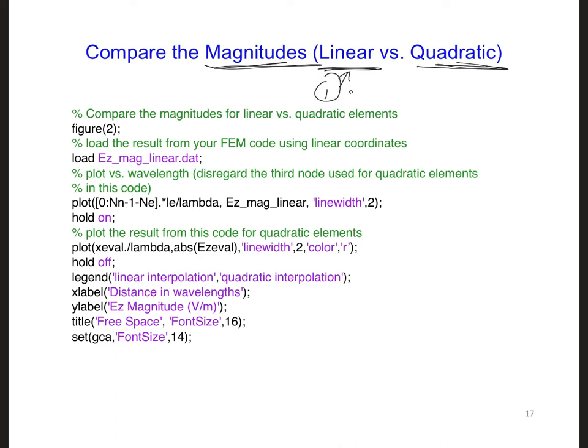Save the output. And here I called the output for the Ez magnitude, I called it ezmaglinear.dat. You can call it whatever you like.